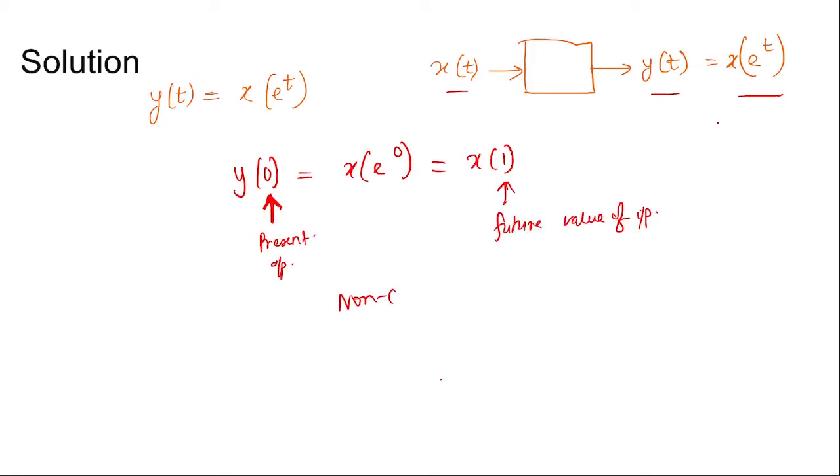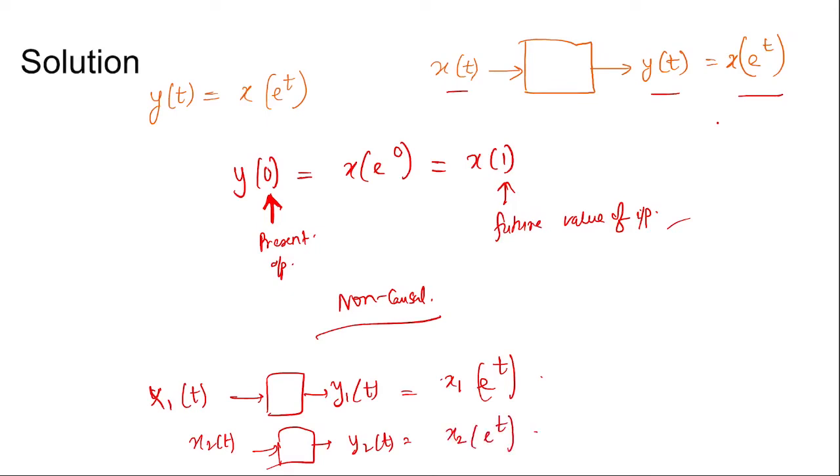So the system is non-causal because it is depending on the future value of input. The system is non-realizable or non-causal. If it is linear we want to analyze, then x1(t) we give as input and we find output y1(t) which is equal to x1(e^t), and x2 we give as input, we find y2(t) equal to x2(e^t).